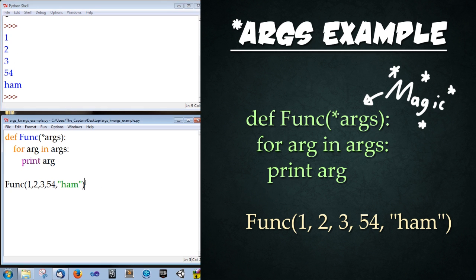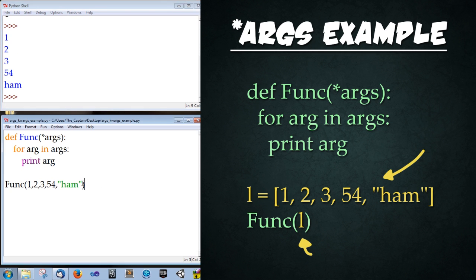Now what if we were to pass in a list of items? How would args react to that? So let's cut that from there. Create a list using L = [1, 2, 3, 54, 'ham'] and then just punch in L into the args. Now what do you think will happen? Do you think it'll run through and print out each individual item or will it print out the list as a whole?